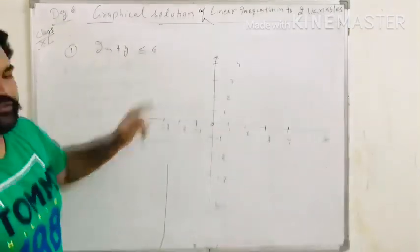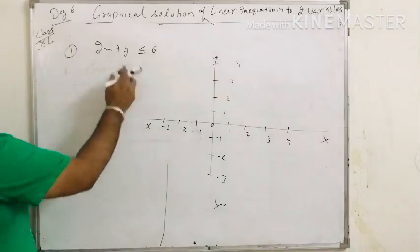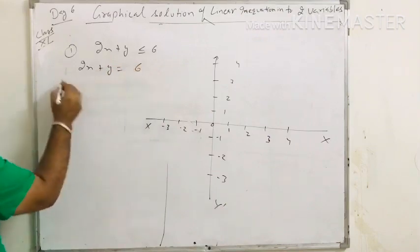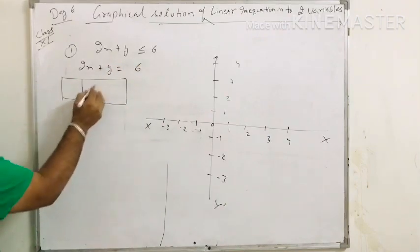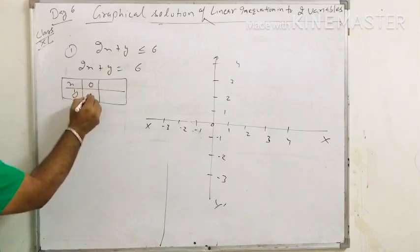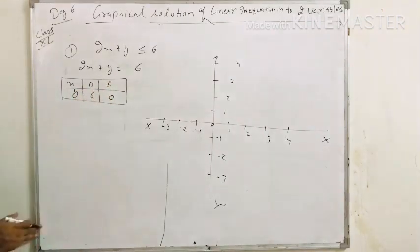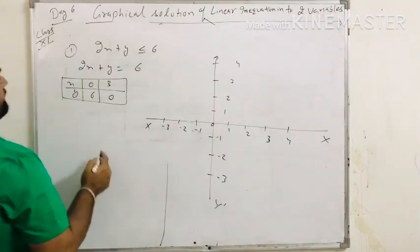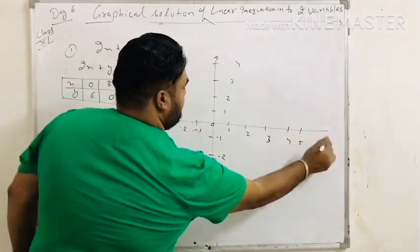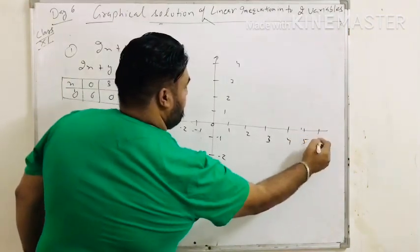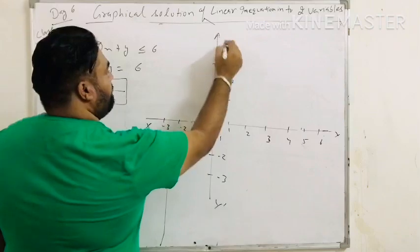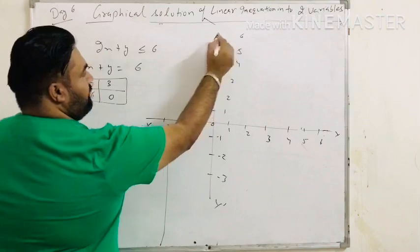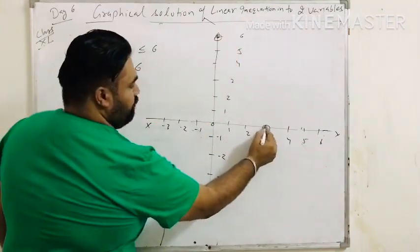The second question: 2x plus y less than or equal to 6. This is a linear inequality. First of all, we find the solutions of the equation 2x plus y equals to 6. The solutions are 0,6 and 3,0. These are the two solutions. Now for the values 0,6 — this is point 0,6 — and 3,0 — this is point 3,0.